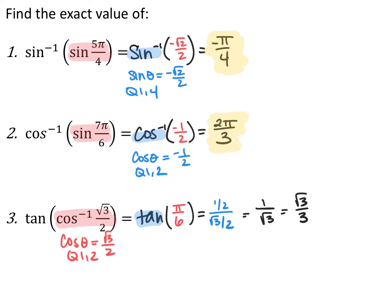For the last one, tangent of the cosine inverse of root three over two. Again, different trig functions, so they won't cancel. Regular trig is on the outside, so my final answer is a ratio. I evaluate the inside: where does cosine equal root three over two in quadrants one or two? That's pi over six. Then tangent of pi over six — tangent is y over x — so I get one-half over root three over two, which is one over root three, or root three over three.